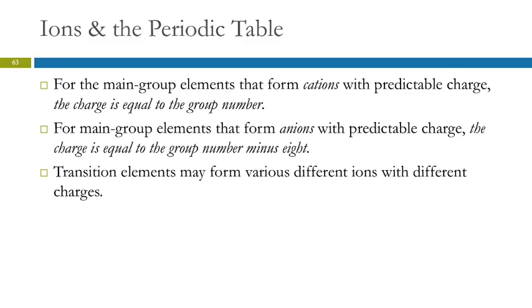So let's go back to this slide that I skipped. So for the main group elements that form cations, those are the metals. The charge is equal to the group number. So that's Group 1A, Group 2A, Group 3A. The charge is equal to the group number. For the main group elements that form anions, those are non-metals. The charge is equal to the group number minus 8. Some students like that. Others don't. You can also just count backwards. I'll show you that in a minute. Then the transition elements can form various ions with different charges.